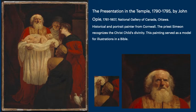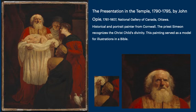Moving on to the Presentation in the Temple. Here we have an English painter, John Opie. Again, the light is used so successfully and it has significance. Simeon recognizes the Christ child's divinity and that this is the light that will illuminate the world. This painting served as a model for illustrations in a Bible. The secondary characters — especially the man in the front — is that Joseph? Joseph is not a usual representation of Joseph as an older man. It's curious.